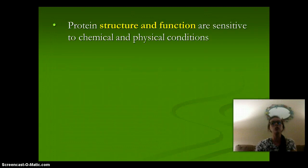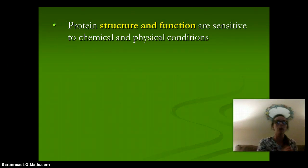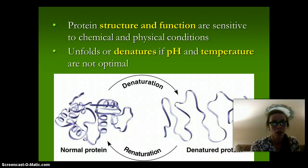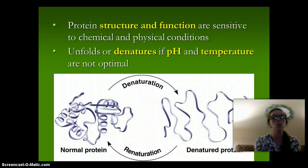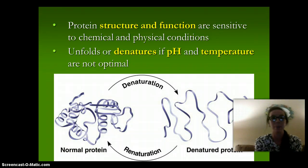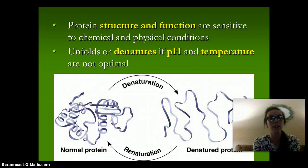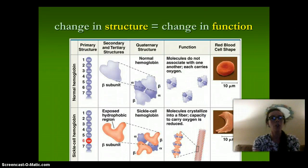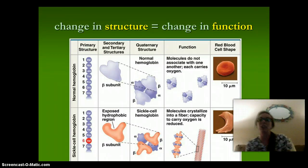Protein structure and function are sensitive to chemical and physical conditions. Structure plays a role in function — they go hand in hand. As the protein unfolds, or denatures, this happens due to pH or temperature. If the temperature is not optimal, it's going to unfold or denature, and then the function of the protein will not be proper. The change in structure equals a change in function.